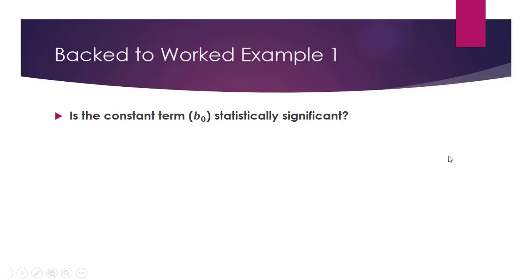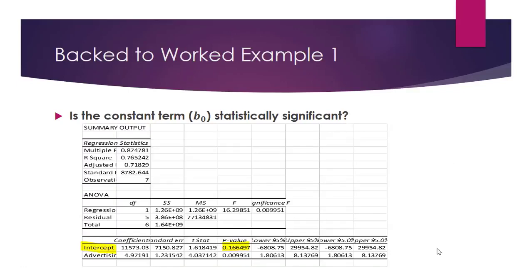Let's go back to our worked example. Is the constant term b0 statistically significant? Is the estimate for b0 close to 0, or is it far enough from 0 for us to conclude that the population intercept term is indeed non-zero? Let's look at the regression output again.